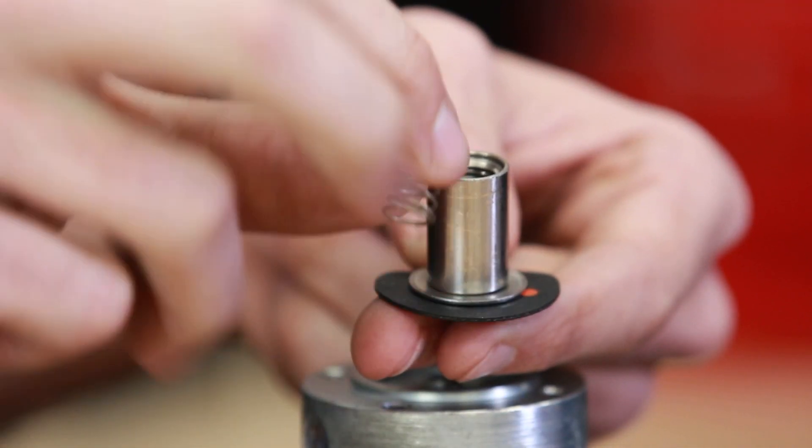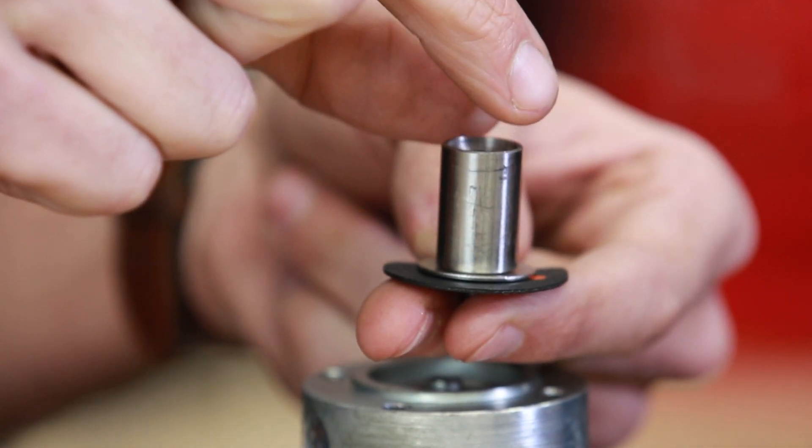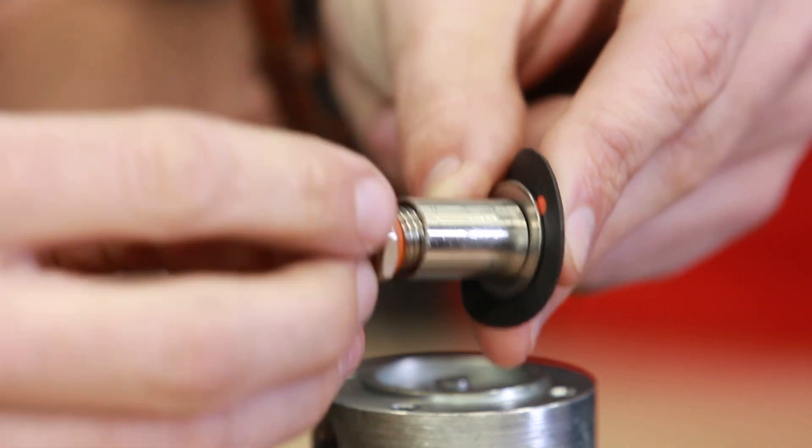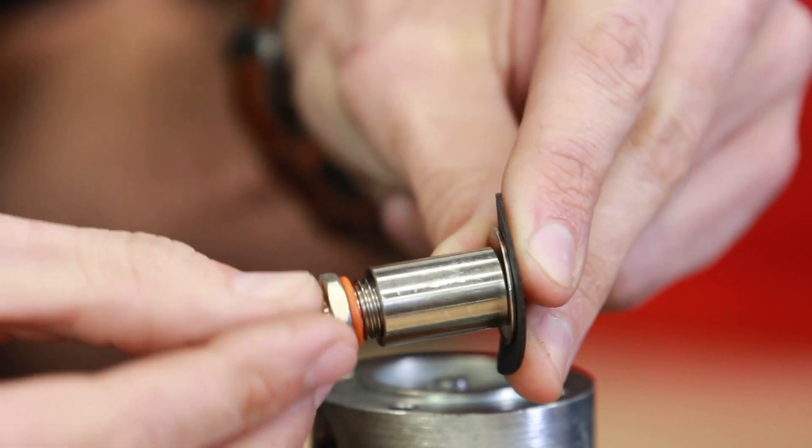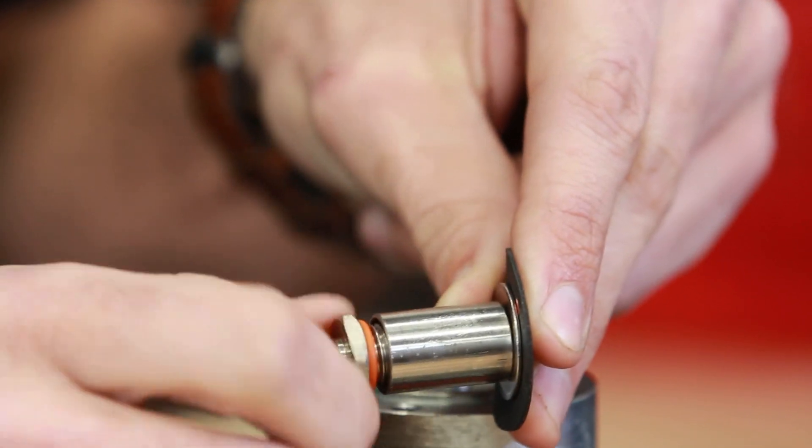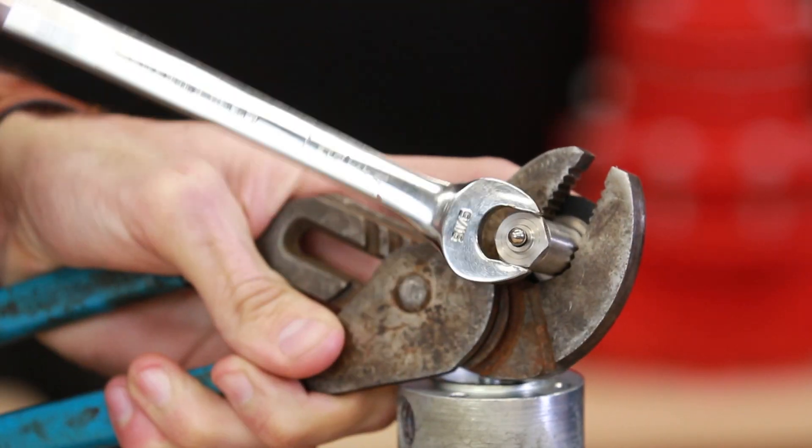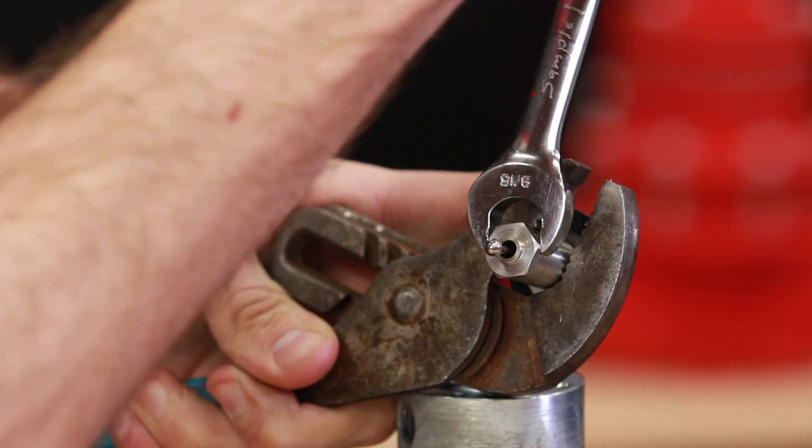Now insert the spring in the housing, placing the wider side on the bottom. Hand start the seat into the housing threads. Hold the housing with channel locks and tighten the seat into the housing.